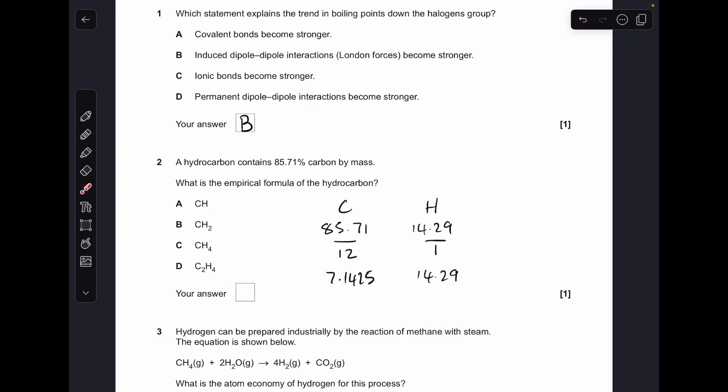Number two, straightforward empirical formula question. We're given the carbon percentage, the hydrogen is just 100 minus 85.71. Divide by the relative atomic masses, that gives us the moles, and you can see the ratio there without dividing by the smallest is one to two, so it was option B.